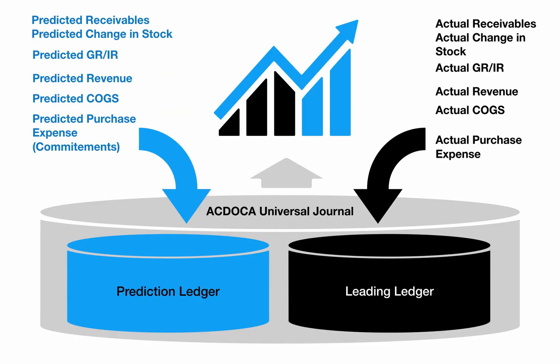Both predicted and actual values are stored in one table, ACDOKA, in the S/4HANA Universal Journal. However, they are assigned to different ledgers. Predicted values are assigned to the extension ledger. Actual values are assigned to the standard leading ledger and, if the parallel accounting ledger approach is used, to a non-leading ledger.